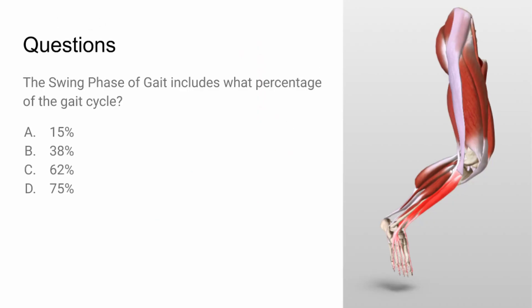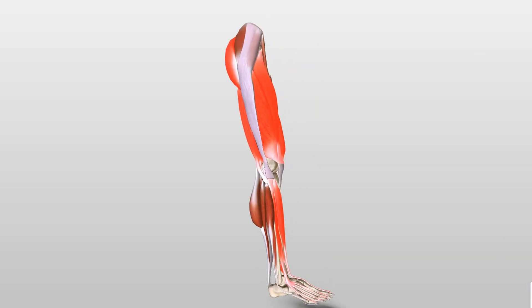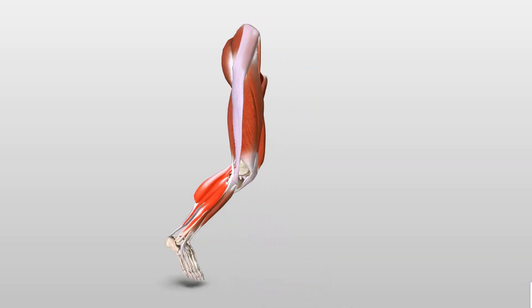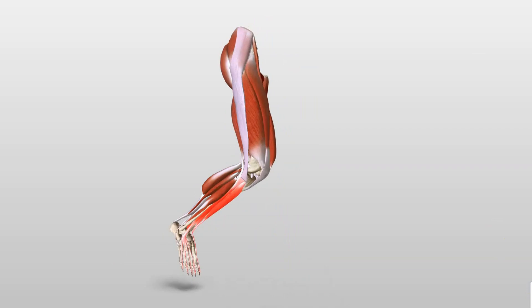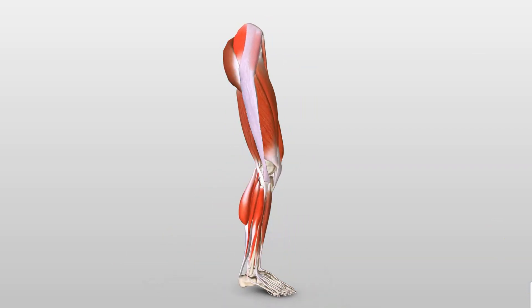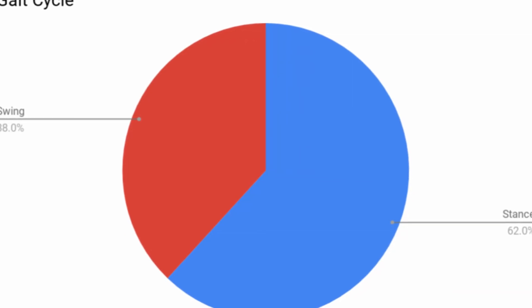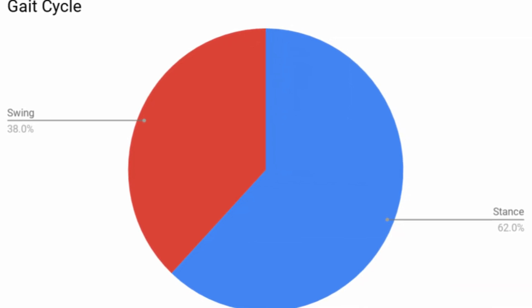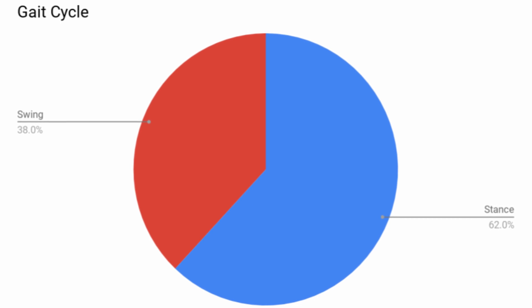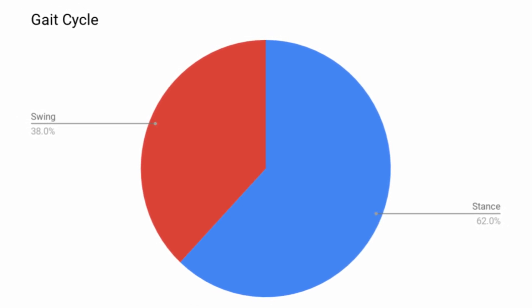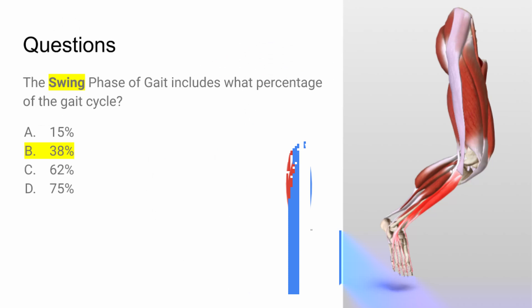Let's look at some questions that you could see. The swing phase of gait includes what percentage of the gait cycle? You have to know the difference between the swing phase and the stance phase, and which takes more of the full gait cycle. The swing phase is 38% of the gait cycle, and the stance phase is 62%. Don't mix those numbers up, and you can answer this question. The answer is B.